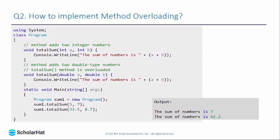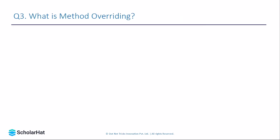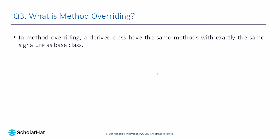Now let's move to method overriding. In method overriding, a derived class has a method with exactly the same signature as the base class. From inheritance, we know there is a base class and a derived class, and since inheritance provides code reusability, a method in the base class can be invoked by the derived class.